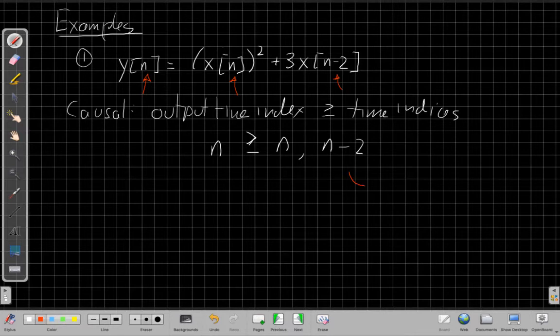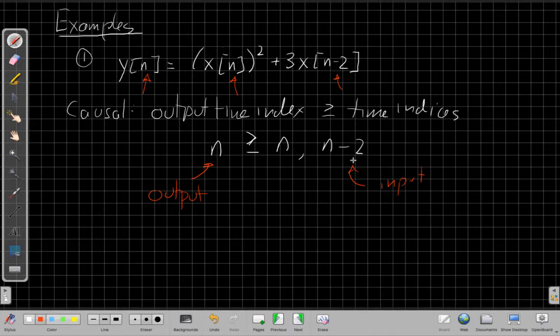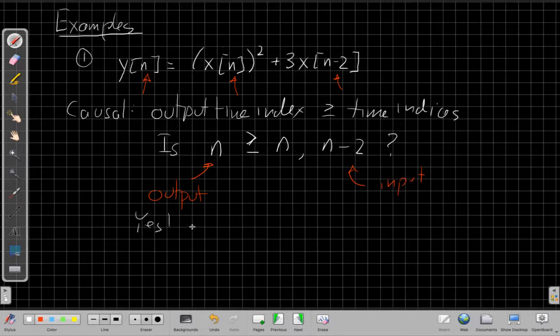This tells me the output at time n depends on the input at n and n minus 2, which are always less than that. So the key question for causality is, is this true? And here it is true. So this tells me the system is causal.